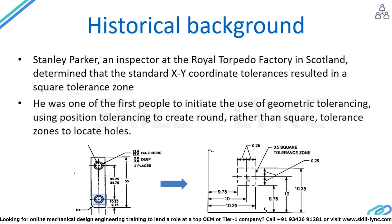If you plot all these tolerances on a graph sheet, with the axis of the counter bore hole at the center and 10 being the nominal size in both directions, you will have 9.75 and 10.25 as the lower and upper limits for the axis location. When you plot all these dimensions together, what you get is a square tolerance zone. This was the observation of Stanley Parker.